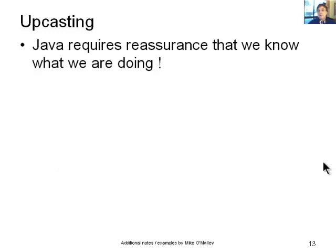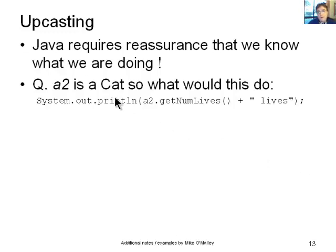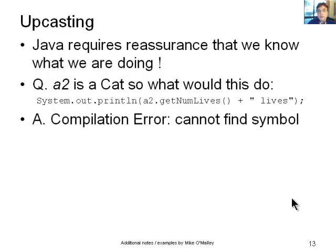So even though that's the case, Java still requires reassurance that we know what we're doing. We've labelled an animal as a cat, but Java still wants us to reassure it that we know what we're doing. So if you try and do this sort of thing, so A2 is a cat, so what would this line of code do? A2.getNumberOfLives, what would that do? It would actually display a compilation error. Cannot find symbol. It cannot find the getNumberOfLives method inside the animal class. So it cannot find symbol. So A2 is a cat, but it's only labelled as a cat. It's still an animal, really. So how do you get around that? How do you invoke cat classes or cat methods for the A2 object? Because it really is a cat.